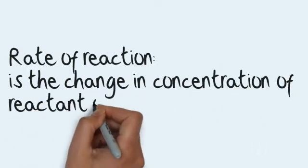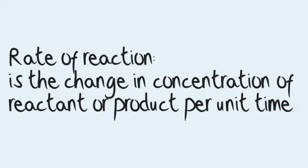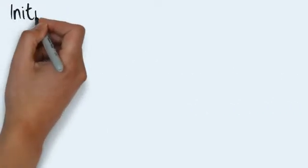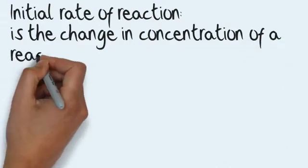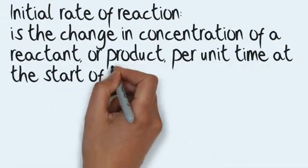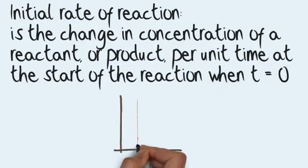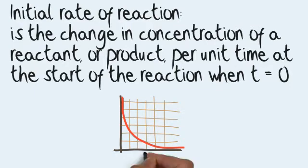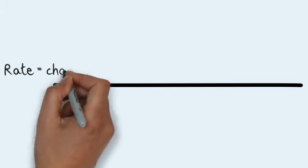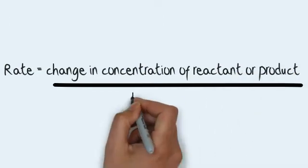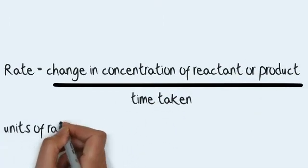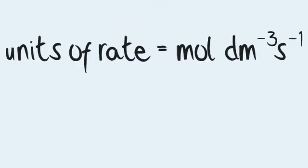The rate of reaction is the change in concentration of a reactant or product per unit time. The initial rate of reaction is the change in concentration of a reactant or product per unit time at the start of the reaction, when T equals 0. Rate equals the change in concentration of reactant or product divided by the time taken. Note that units of rate are moles per dm cubed per second.